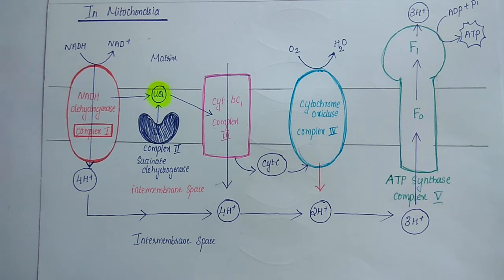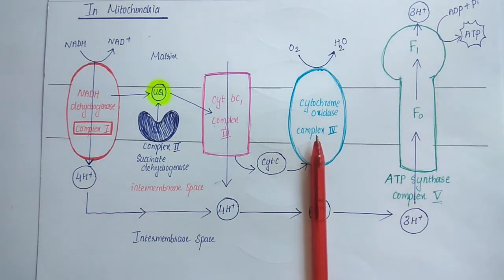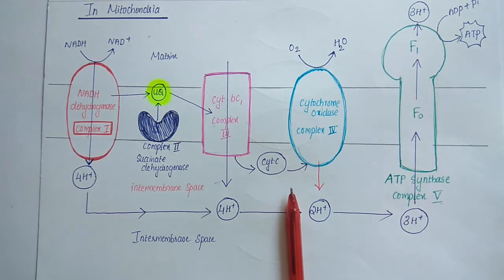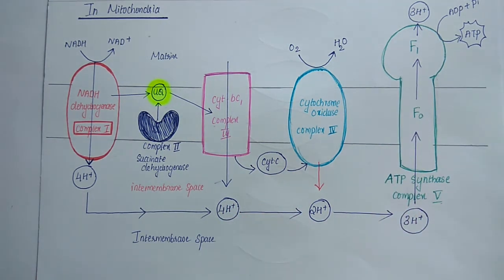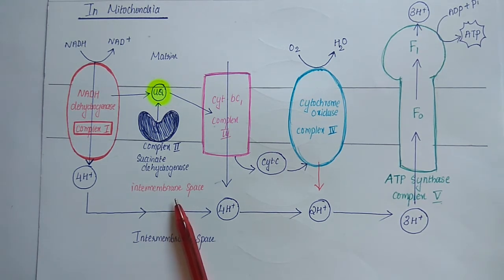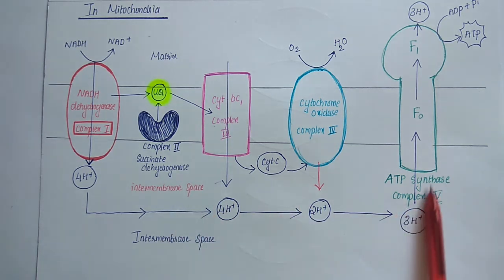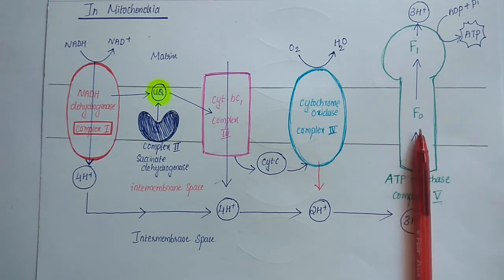According to the chemiosmotic theory, the orientation of electron carriers within the mitochondrial inner membrane allows the transfer of protons across the inner membrane during electron flow. The flow of electrons through the complexes is coupled with the flow of protons, helping in the formation of ATP. Electron flow through complexes 1 to 4 is coupled with proton pumping across the membrane, producing a chemical gradient and electrical gradient together called the proton motive force. The intermembrane space is impermeable to protons, so these protons can re-enter the matrix only through specific proton channels called F0, which is part of ATP synthase. The proton motive force drives protons back into the matrix, providing energy for ATP synthesis.